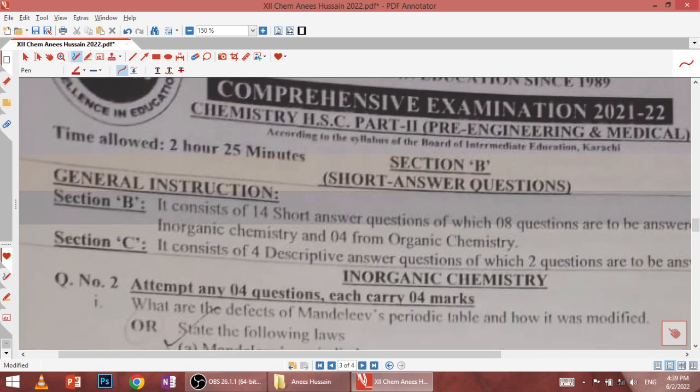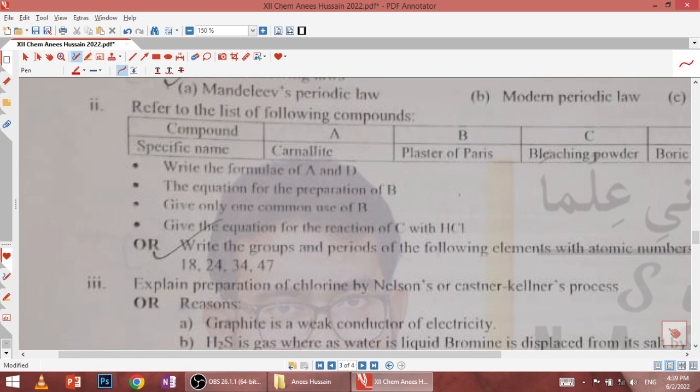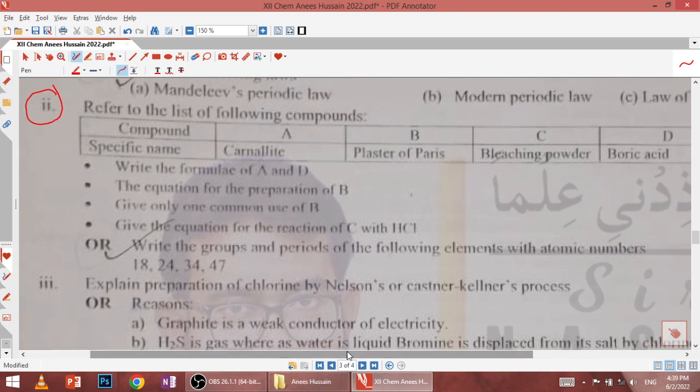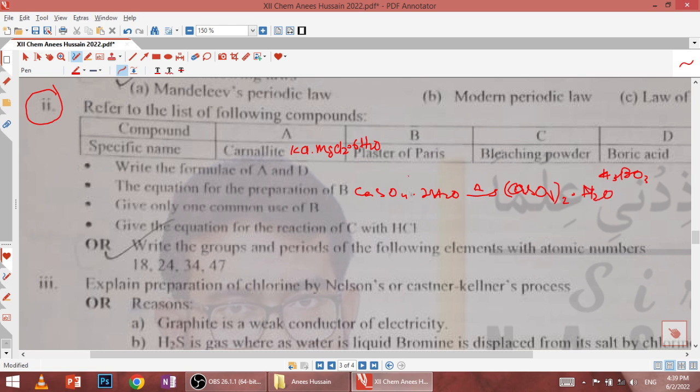Section B. Question 2 is the box question which normally comes from chapter 3 or 4. Write the formula of carnallite which is KCl·MgCl2·6H2O and boric acid which is H3BO3. Write the equation for the preparation of gypsum: CaSO4·2H2O. Write one common use: we are using plaster of Paris for the process of casting. Give the equation for reaction of bleaching powder with HCl: calcium chloride, HOCl and water are liberated.